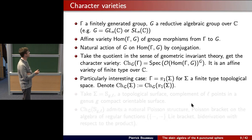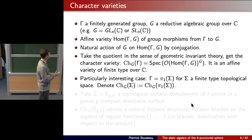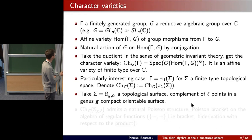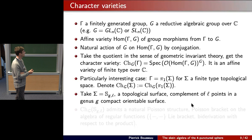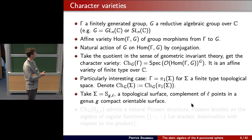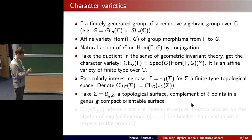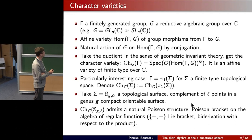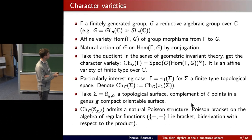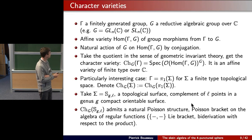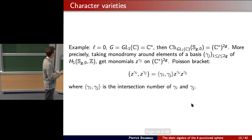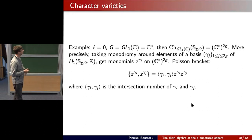We'll be particularly interested in the case where Γ is the fundamental group of some topological space — specifically where Σ is a topological surface which is the complement of l points in a genus-g compact orientable surface. What is special in this case is that the character variety admits a natural Poisson structure: there is a natural Poisson bracket on the algebra of regular functions on this affine variety.